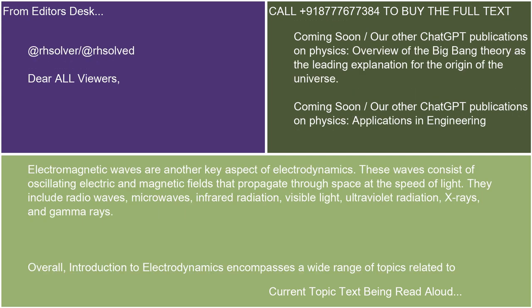Electromagnetic waves are another key aspect of electrodynamics. These waves consist of oscillating electric and magnetic fields that propagate through space at the speed of light. They include radio waves, microwaves, infrared radiation, visible light, ultraviolet radiation, X-rays, and gamma rays.